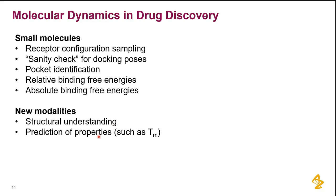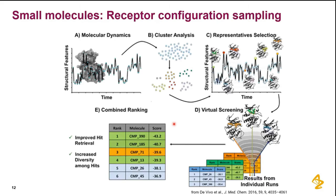You can also use MD in principle to predict properties such as melting temperature. For receptor configuration sampling: instead of just taking a crystal structure, you run an MD simulation over the course of 100 nanoseconds or so, cluster it, and select representative conformations from those snapshots. We recently implemented this to do ensemble docking in the reinforcement learning of our idea generation, which should help enrich configurational sampling.